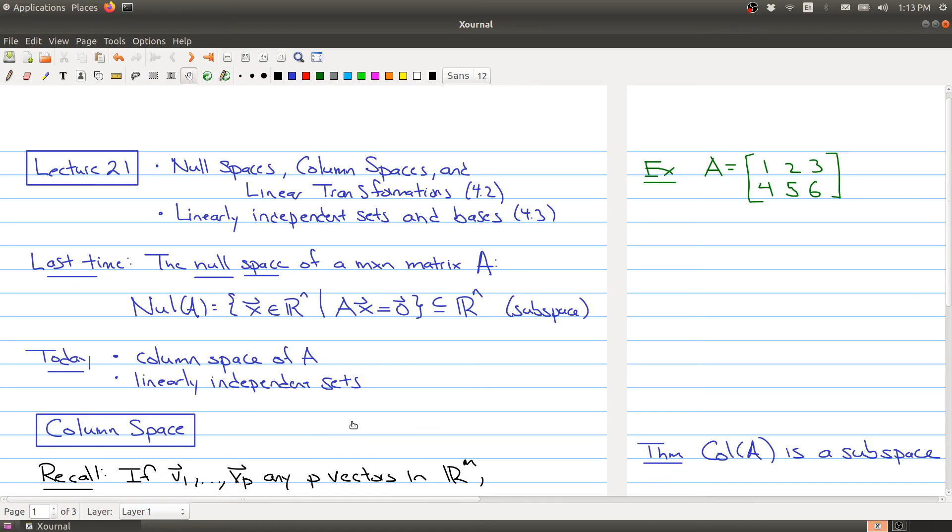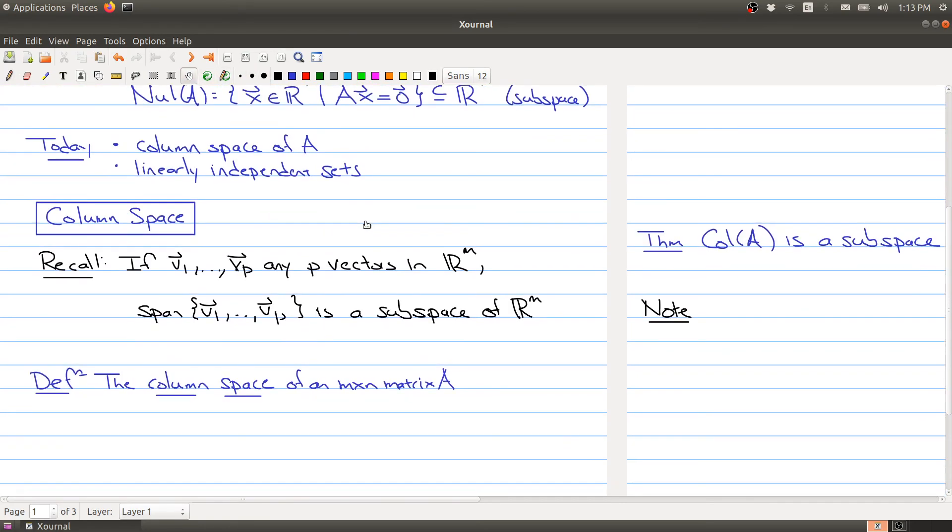So let's start with the column space. We're going to just kind of quickly recall something that we proved in the last lecture, which is as follows. That if you take any collection of vectors, V1 through VP, we have p vectors in R M, then the span of those vectors is a subspace of R M. So we saw that whenever you take a span of a collection of vectors, you're building subspaces. So that means that the set of all linear combinations is a vector space using the same addition and scalar multiplication of R M.